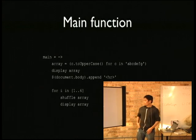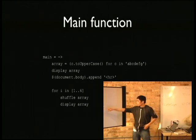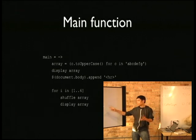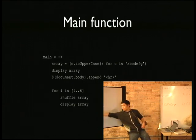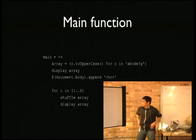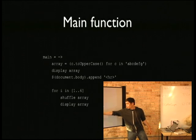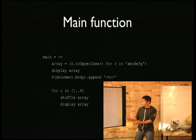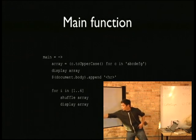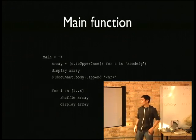Here's the main function. As you can see, it's basically whitespace-delimited. We have array comprehension right here — it uses parentheses, but since JavaScript doesn't have generators, it actually produces an array. The second line in the main function where it says 'display array' is actually a function invocation. It borrows from Ruby where you don't actually need parentheses to call a function. Here I'm calling the append method on jQuery, and then we have a range, which I think is also from Ruby.